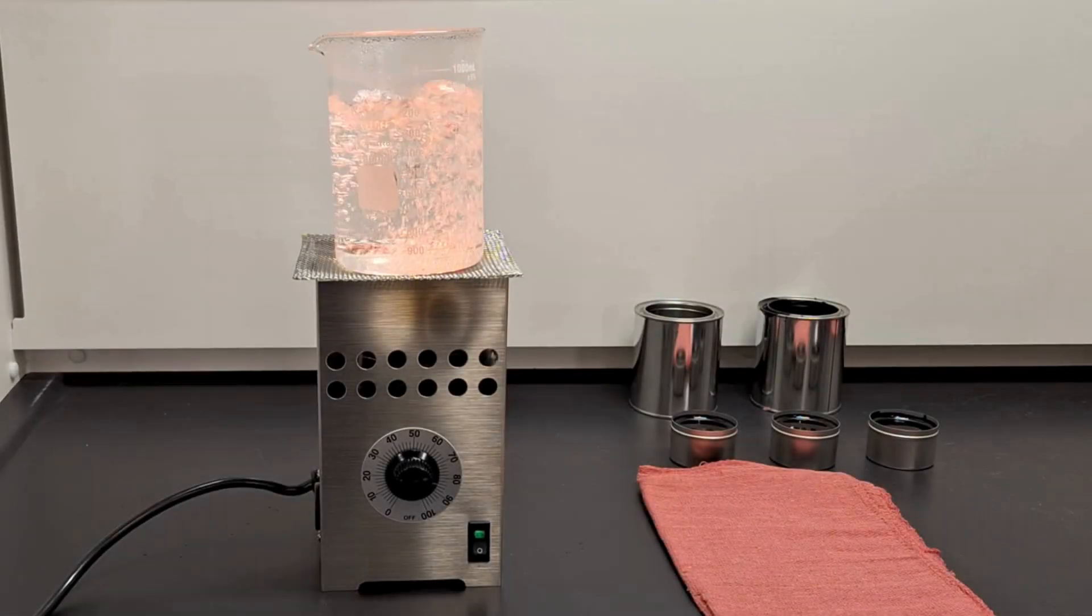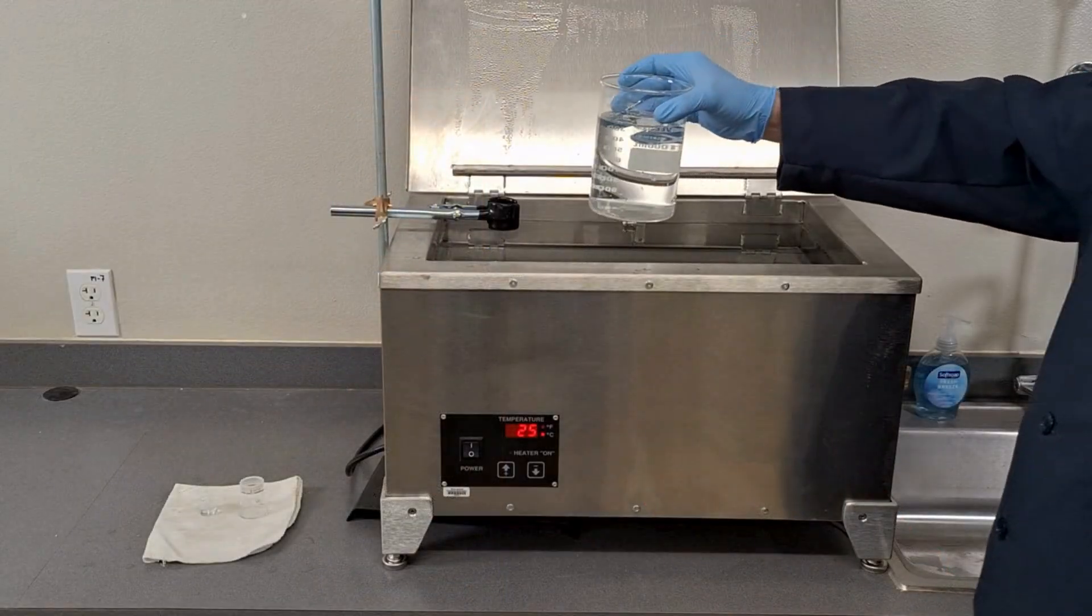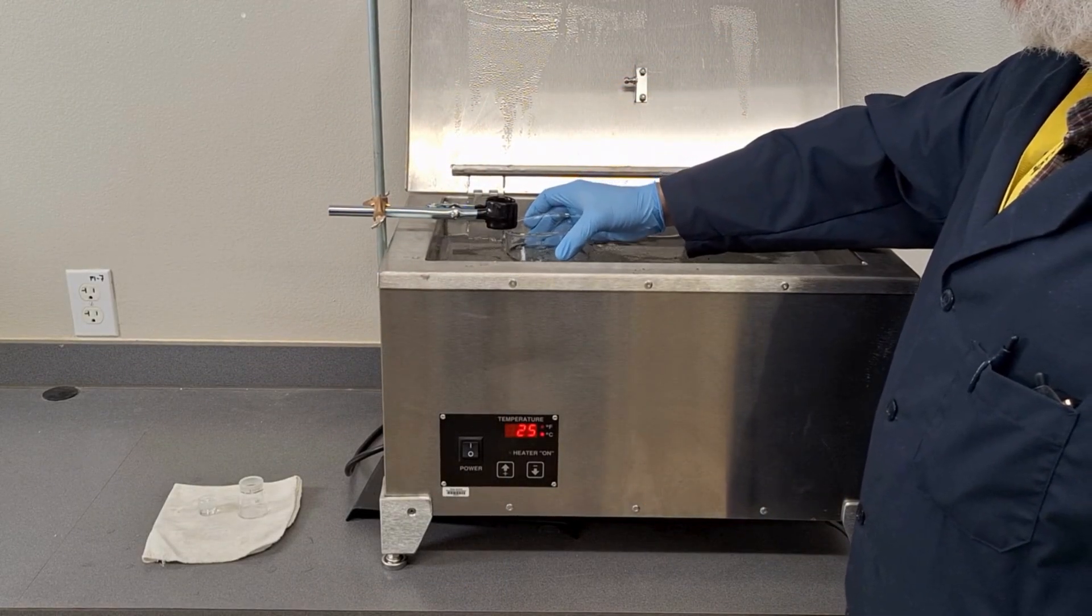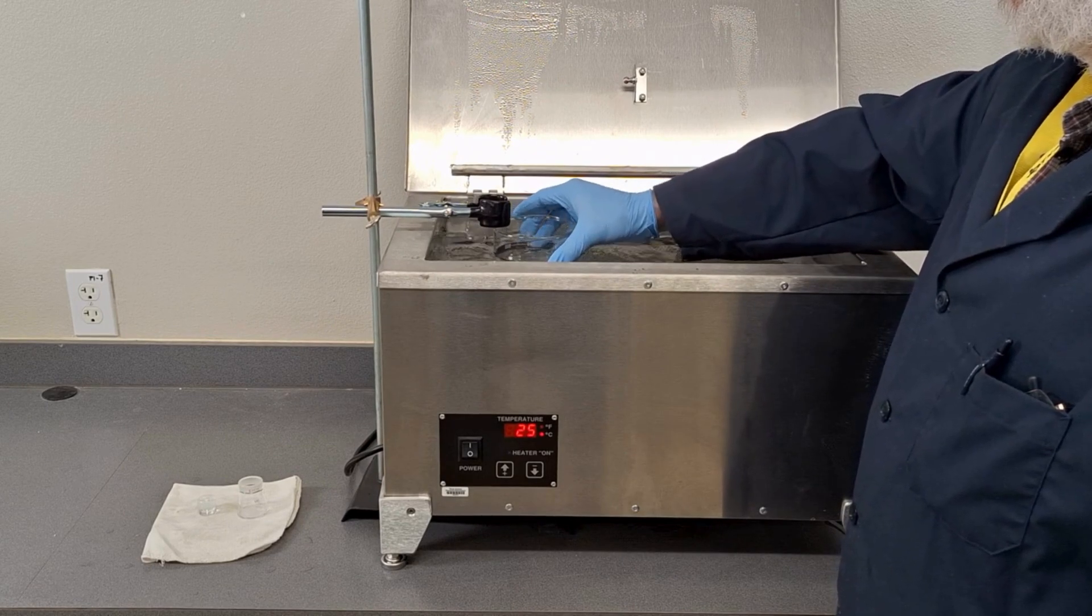Boil at least 600 milliliters of distilled or deionized water. Once it is cooled down, place the beaker into the water bath. Ensure the beaker is stable to prevent tipping while maintaining water circulation.